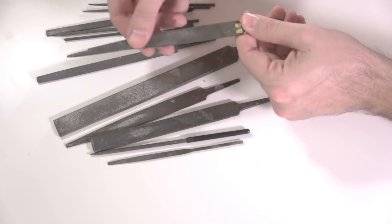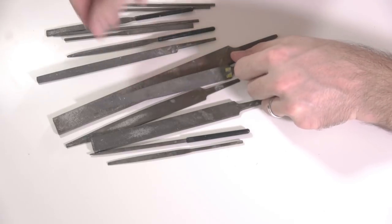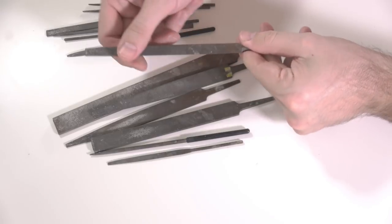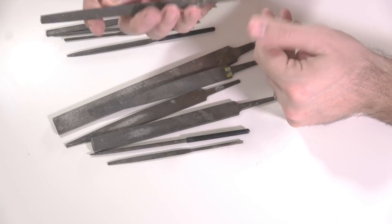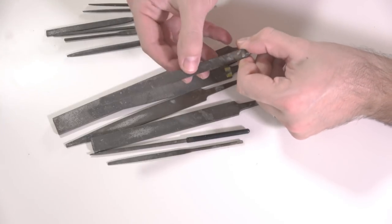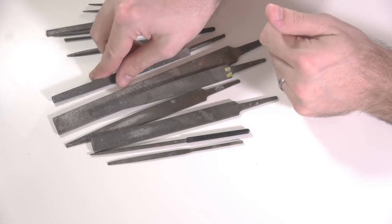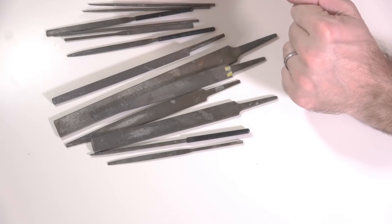I've got a selection of larger files here as well. This is a warding file with quite a rough cut on it, that's very useful. And this is a sort of medium cut triangular file. This is a lovely file to use, it's got a really nice weight and you can actually do some quite delicate work with that, even though it's quite a large file.